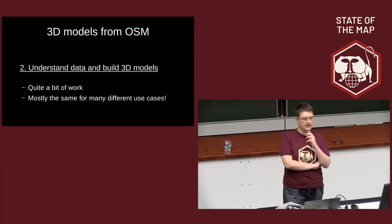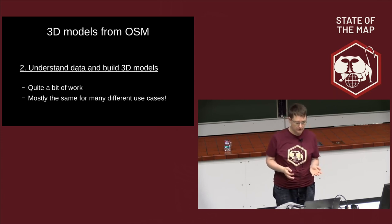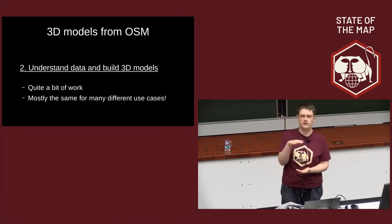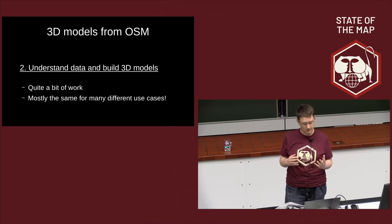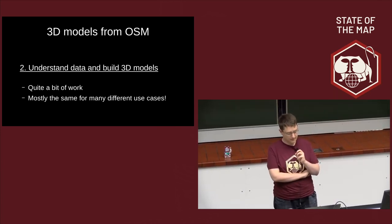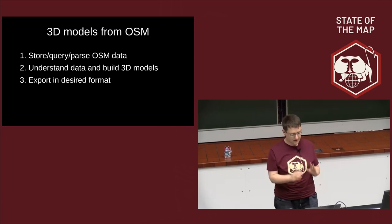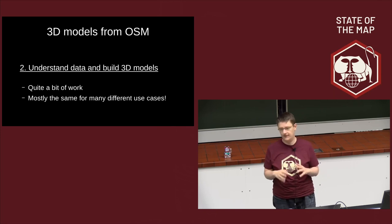A big part of the idea of OSM2World is that step two — understanding data and building 3D models from it — is quite a bit of work if you want to do it properly. Just rendering a 3D building by extruding the outline is relatively easy, but creating individual roof shapes and so on, which can all be tagged in OSM, requires code that supports all of these variations. This work is mostly the same for many different use cases, while step three to export models differs.